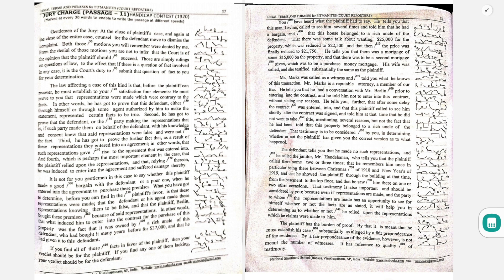What you have got to determine before you can find in the plaintiff's favor is that these representations were made, that the defendant or his agent made these representations knowing them to be false, and that the plaintiff Berlin bought these premises because of said representations.